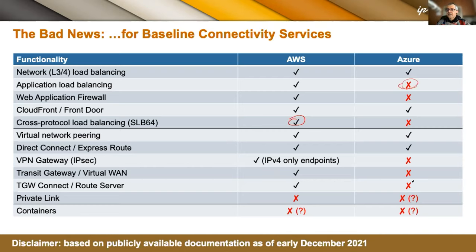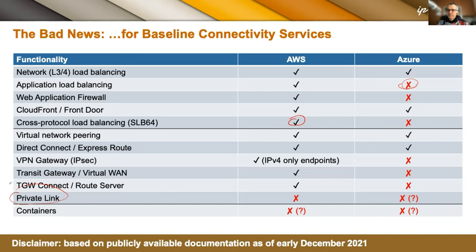Private link — a sort of NAT with load balancing between two virtual networks — only works on IPv4 in both AWS and Azure. And no one was brave enough yet to turn on IPv6 in their managed container service; containers in both public clouds are still on IPv4.